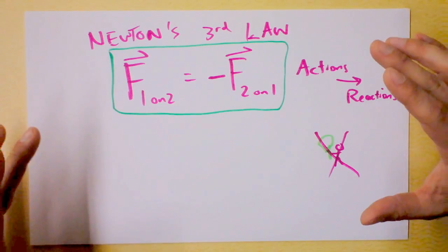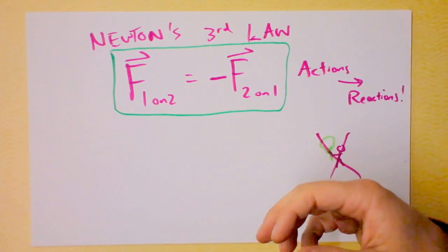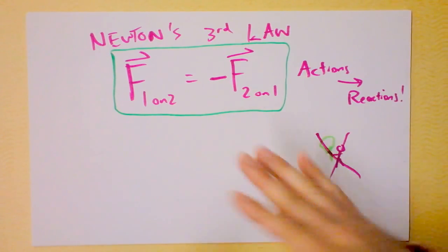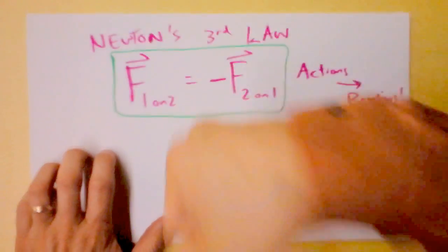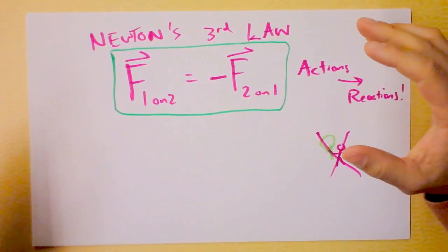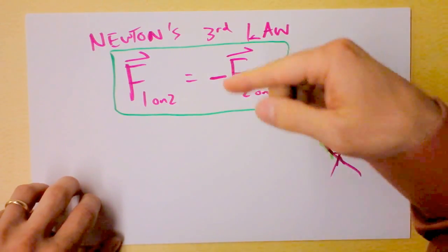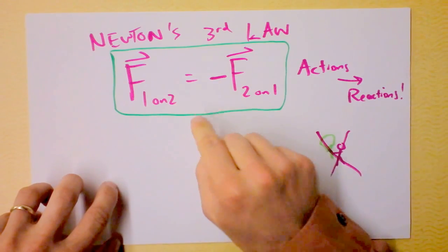It also means that if I hit the table, then the table can hit back and therefore I get hurt. It's the same kind of punch as the paper, but the paper doesn't hurt, yet the table does. Because the table can hit back and therefore I can hit the table.